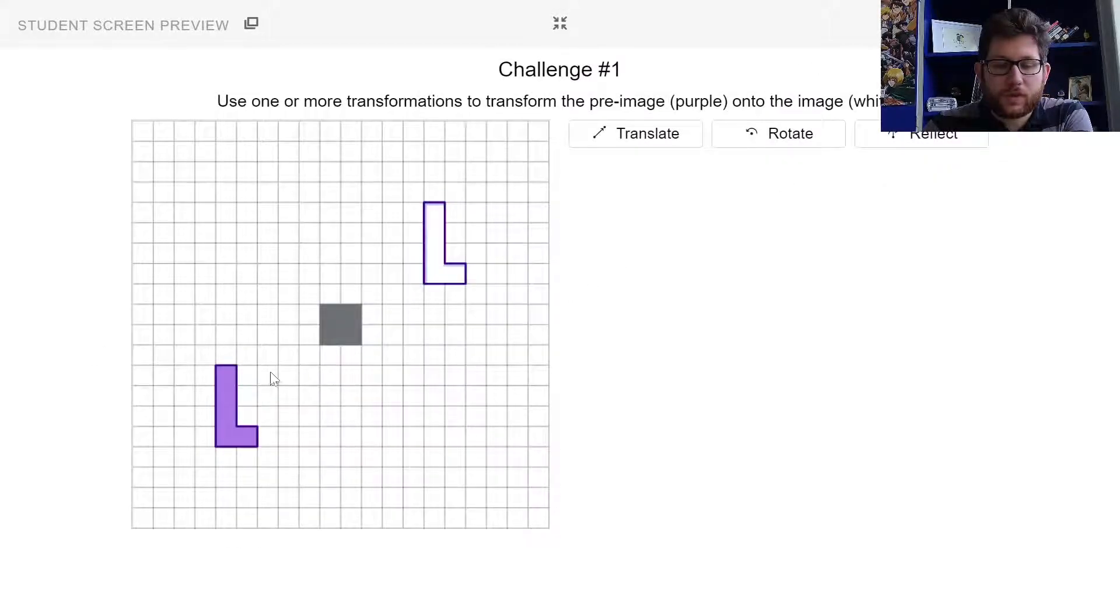Now we have three tools to work with. Our goal is to get this shape here on the left to match up on the white shape here on the right. Translate - that's our slide, so we can take our L shape and slide it left or up and down. Our rotate tool spins it, and our reflect tool flips it. You can use any of these tools any number of times.